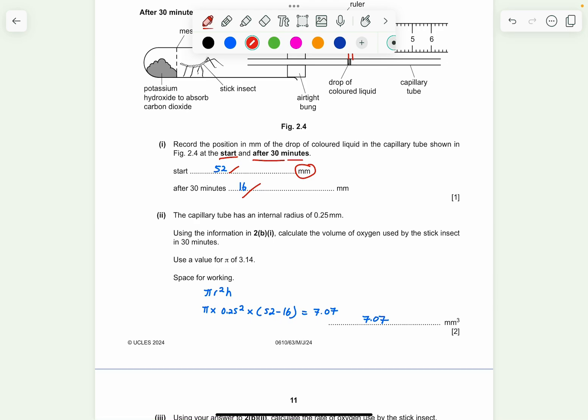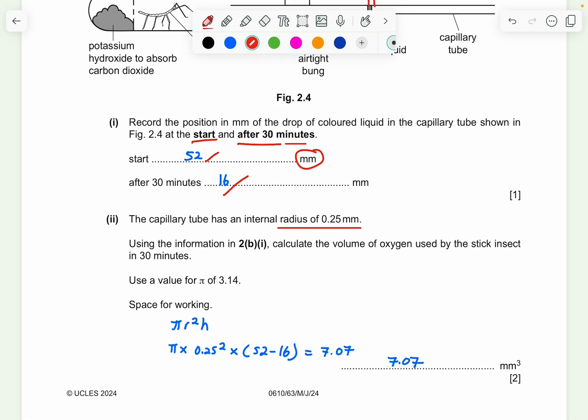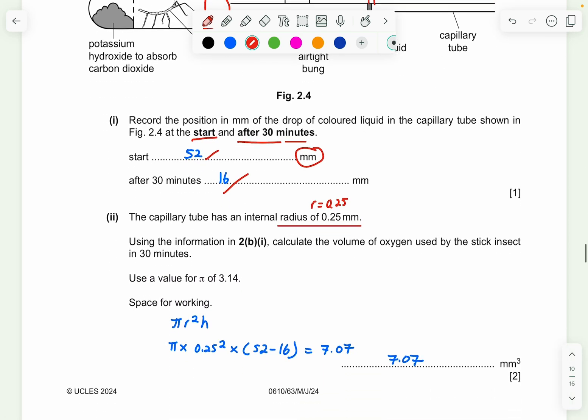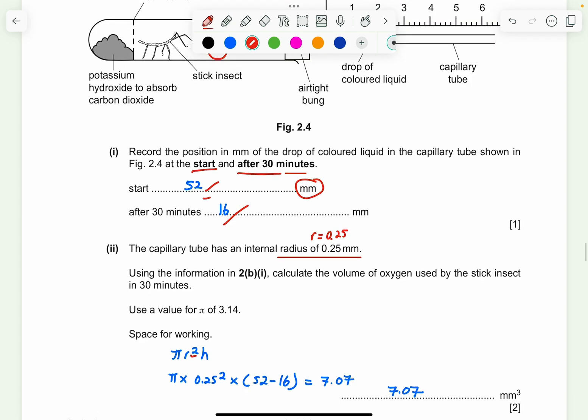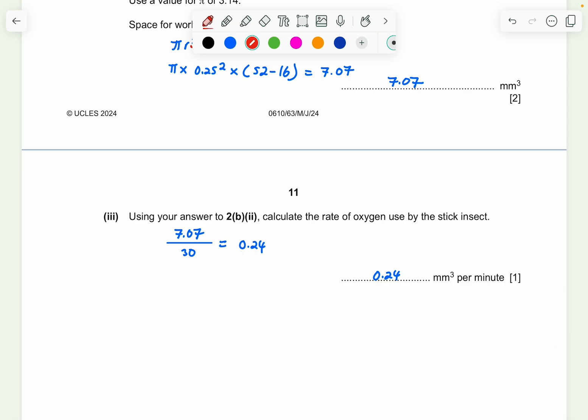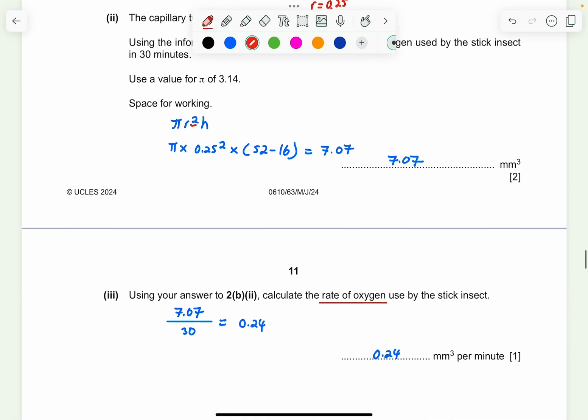And then the capillary tube has an internal radius of 0.25 meters. So they're giving you the R is 0.25 millimeters. Using the information, calculate the volume of oxygen used by the stick insect in 30 minutes. So you can see that the entire thing here is a cylinder. So how are you going to measure this is by using pi r square h. So again, you have to apply your mathematical understanding. There's no formula going to be given to you. You use through your understanding in mathematics. So pi r square h is by taking pi times 0.25 square because it's R square. You get it from here times 52 minus 16. Use this minus 16. And you're going to get 7.07 millimeter cube.